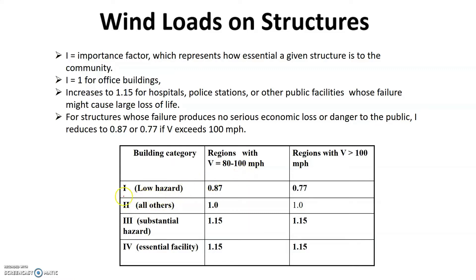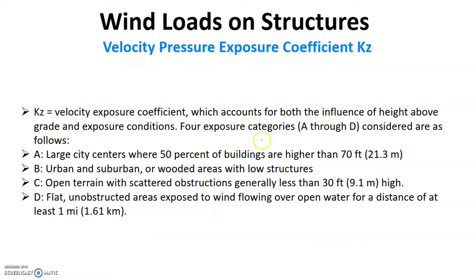There is also a table from which you can find the value of I depending upon some factors such as the level of hazard and the velocity in the region. We can pick the value of importance factor I. The next factor that we need to determine is KZ, the velocity exposure coefficient.